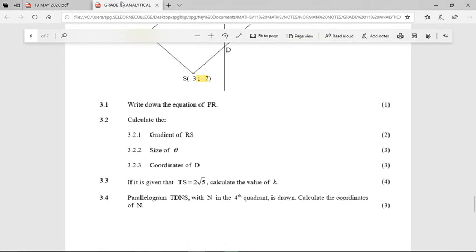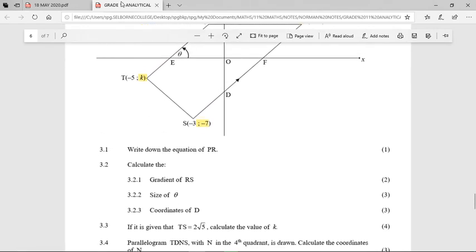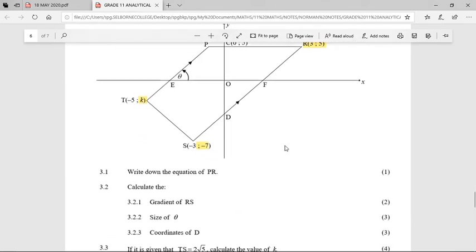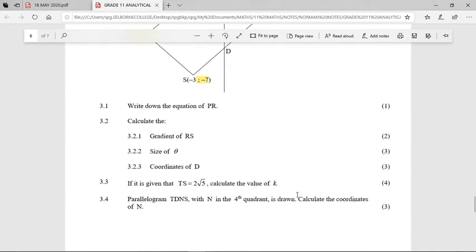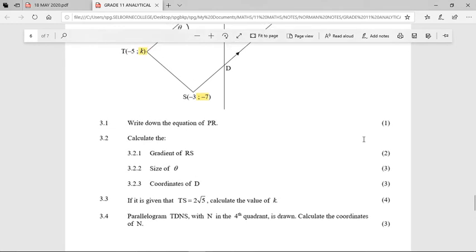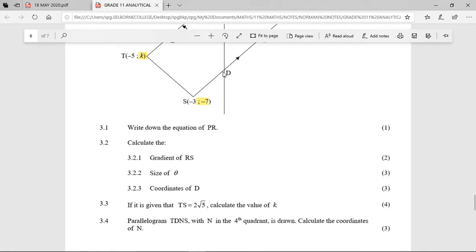The slight variation would have been to multiply out that bracket of k plus 7. Our last question, 3.4, says parallelogram TDNS with N in the fourth quadrant is drawn. Calculate the coordinates of N. So think carefully here. T, where I am now, D. N would have to be somewhere in the fourth quadrant, S. Please keep it in the order of letters that they give you. TD, N somewhere here, S. It's going to form quite a squashed, almost diamond-shaped quadrilateral. It's very important to realize that they're telling us that it is a parallelogram.